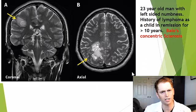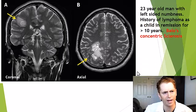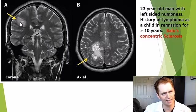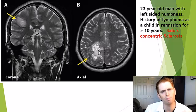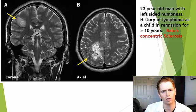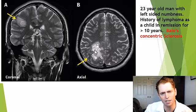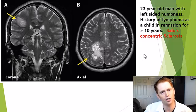This is the 23-year-old man with left-sided numbness who has a lesion with the appearance of an onion — affected and spared areas alternating. This appearance, called onion skinning, is consistent with Balo's concentric sclerosis, a rare form of multiple sclerosis, an inflammatory disease of the brain that can potentially be treated with immunosuppressants. It has no known association with prior lymphoma, which is likely a red herring.